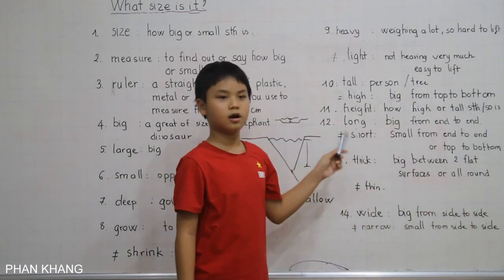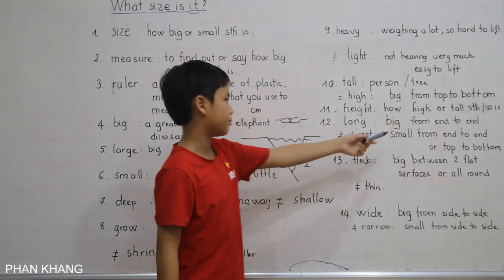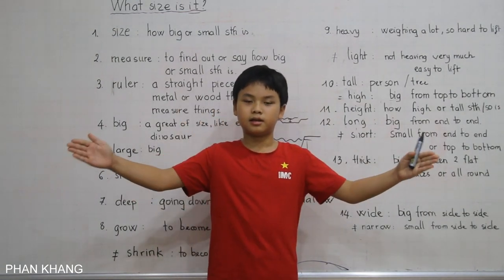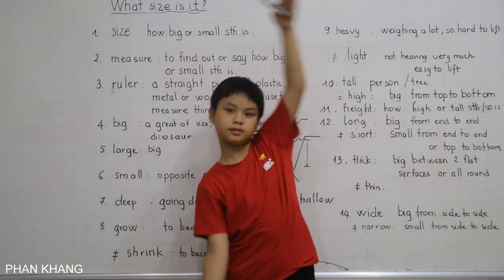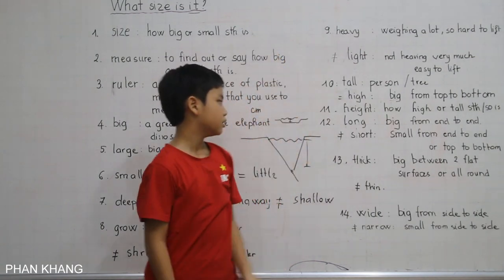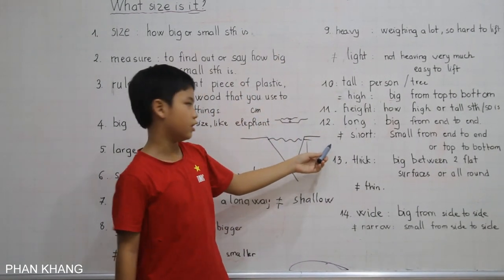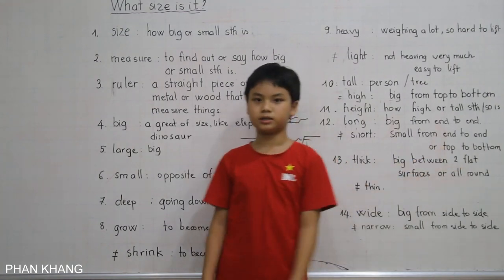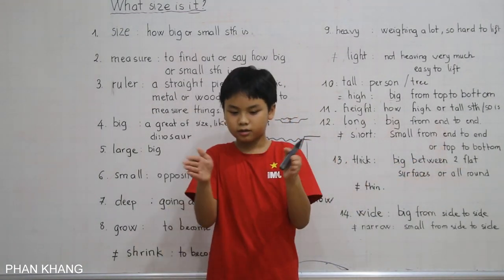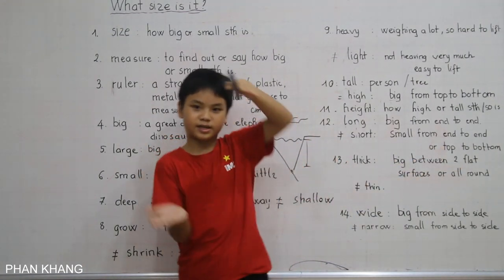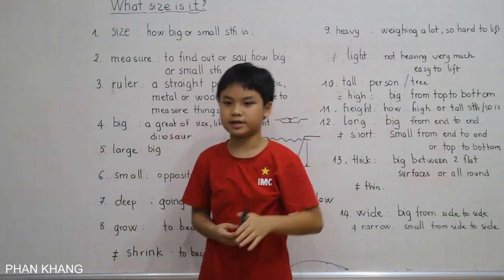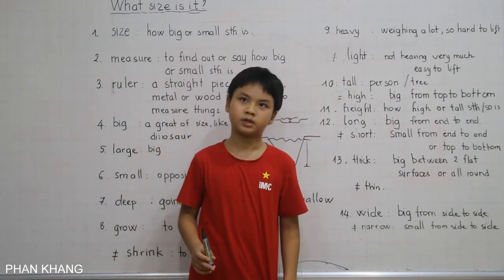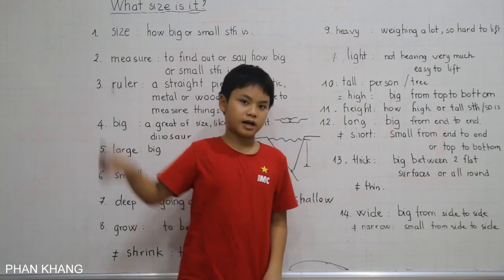Next is long. Long means from end to end — horizontally. But high means vertically, from top to bottom. Short is the opposite of long — small from end to end or top to bottom. Short can mean a small horizontal size, like a short mouth, or a small height. A peak is a little bit high.